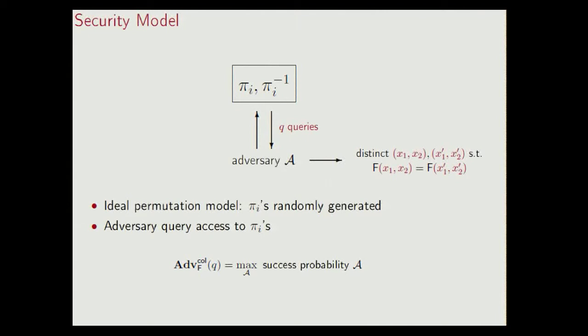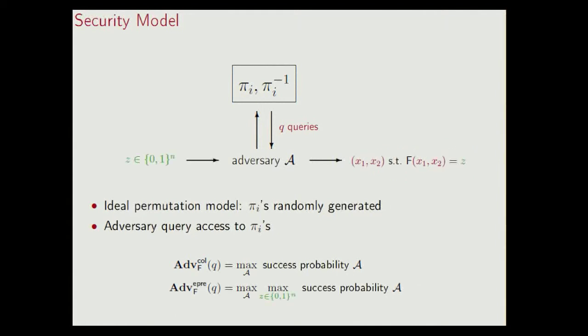In the work, we also look at pre-image security. In the case of pre-image security, we consider the adversary to be given a range value z, and its goal is to find a pre-image tuple x1, x2. The pre-image security is then defined as the maximum success probability over all adversaries and over all range values.